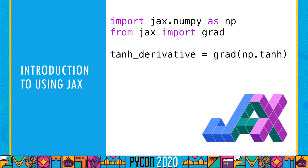Before we get into higher dimensional versions of the derivative, I want to take a quick detour and show you what automatic differentiation looks like in practice. One library that implements automatic differentiation is called JAX. Here is how to compute the derivative of a function using the JAX library. The things you should notice are that you are using a JAX version of NumPy — they import jax.numpy as np. It has an identical API to the more familiar NumPy, and where it doesn't, they consider that a bug.